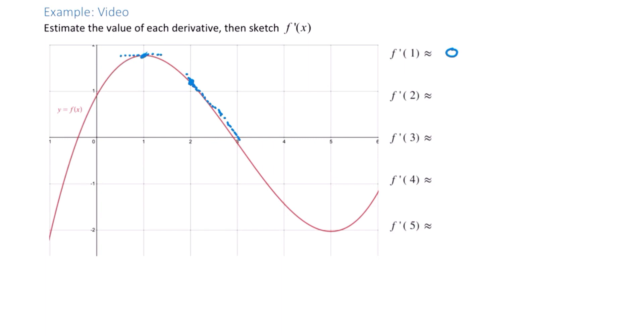So let's see if we can approximate that slope using our slope formula. We have a y value of 0 minus a y value of roughly 1.1 divided by an x value of 3 minus x value of 2. So that gives me negative 1.1 over 1, roughly negative 1.1 is our slope.